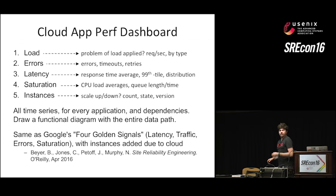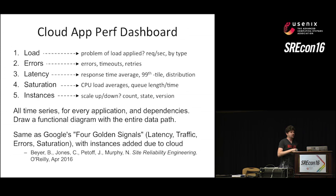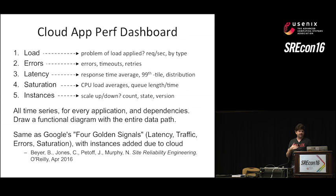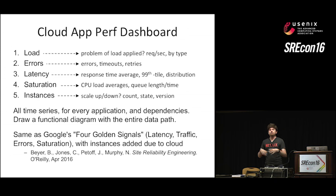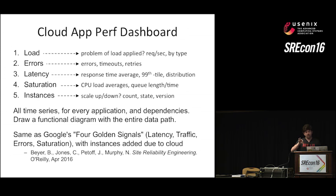Load — workload characterization is a methodology in itself, and many issues can be identified because load increased for some reason. Errors — errors, timeouts, and retries. Latency — not just the average but percentiles, distributions, tail latency. Saturation is a separate metric that gives more important information for understanding how overloaded systems are. Those four metrics — load, errors, latency, and saturation — are actually in the Site Reliability Engineering book as Google's four golden signals on page 60.